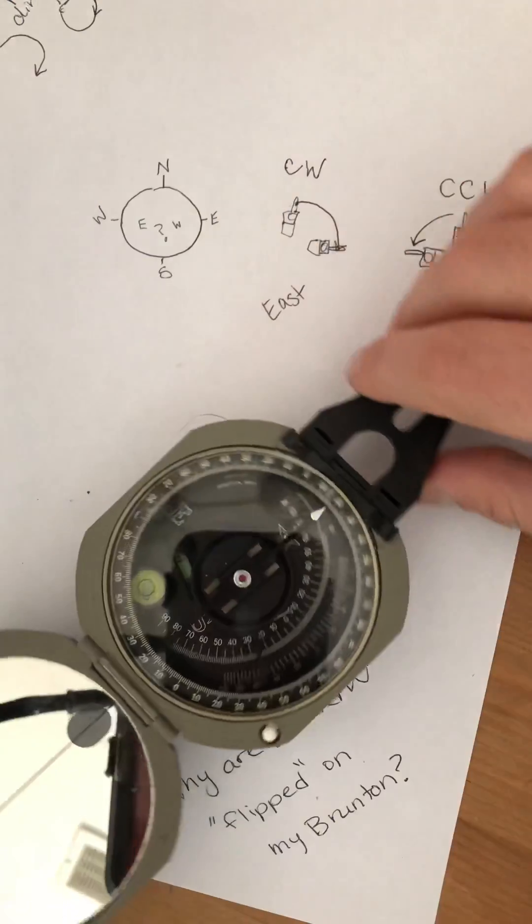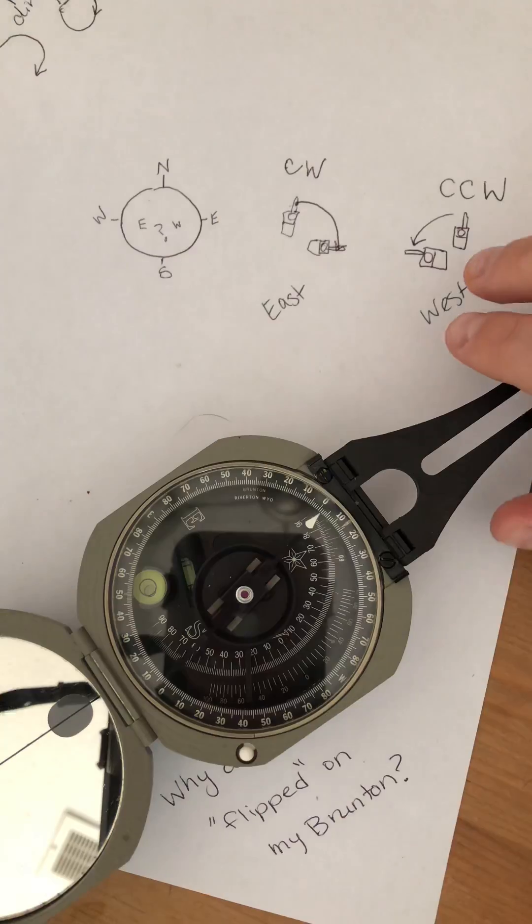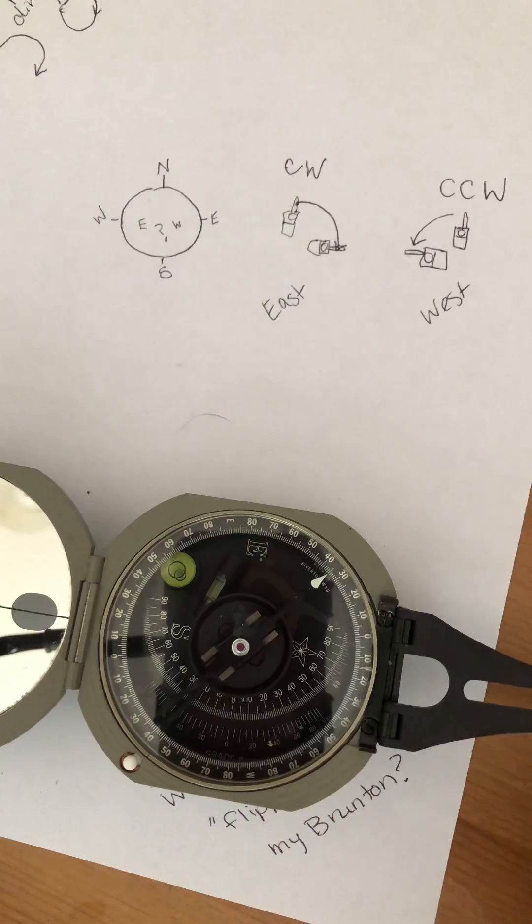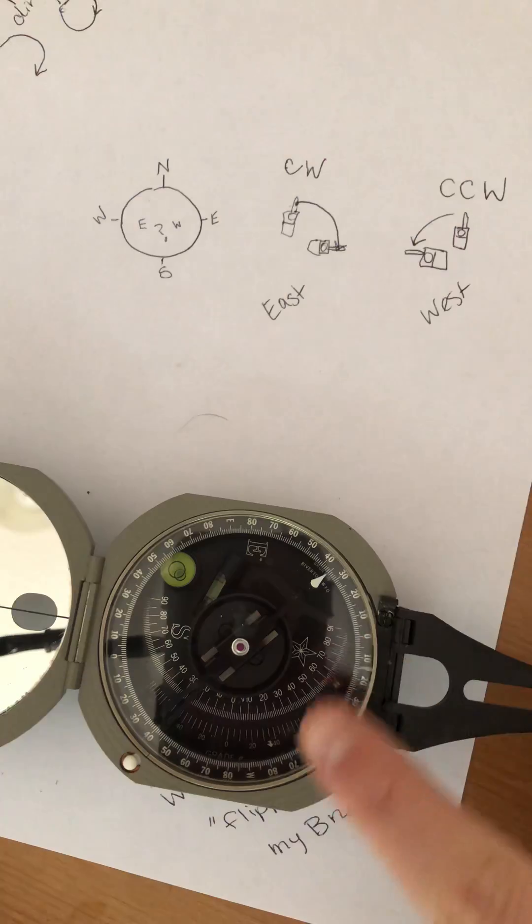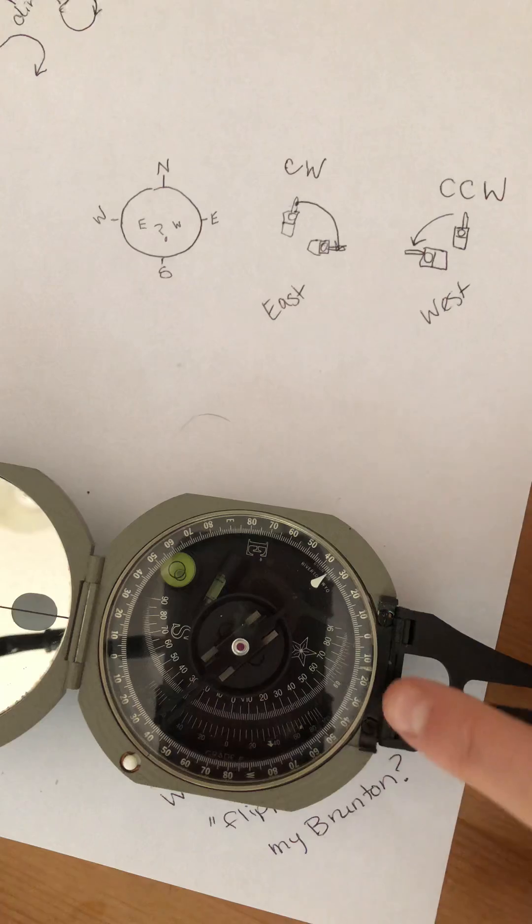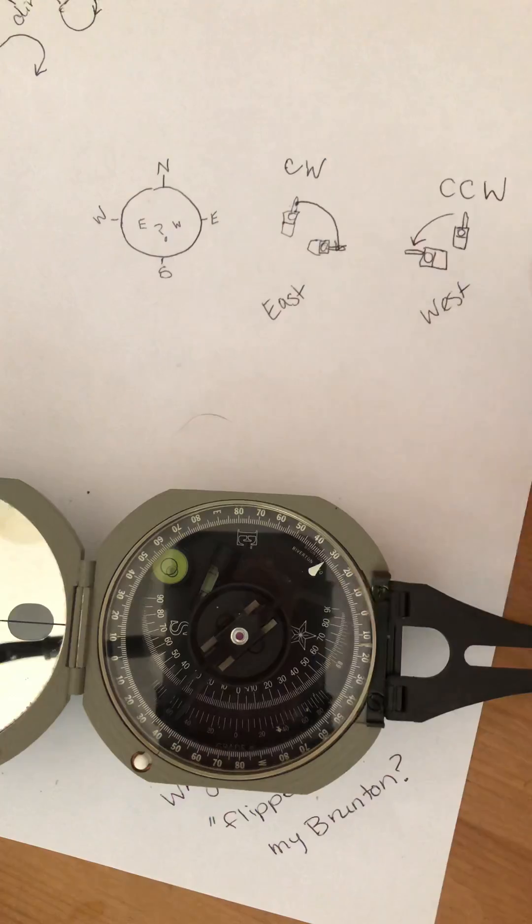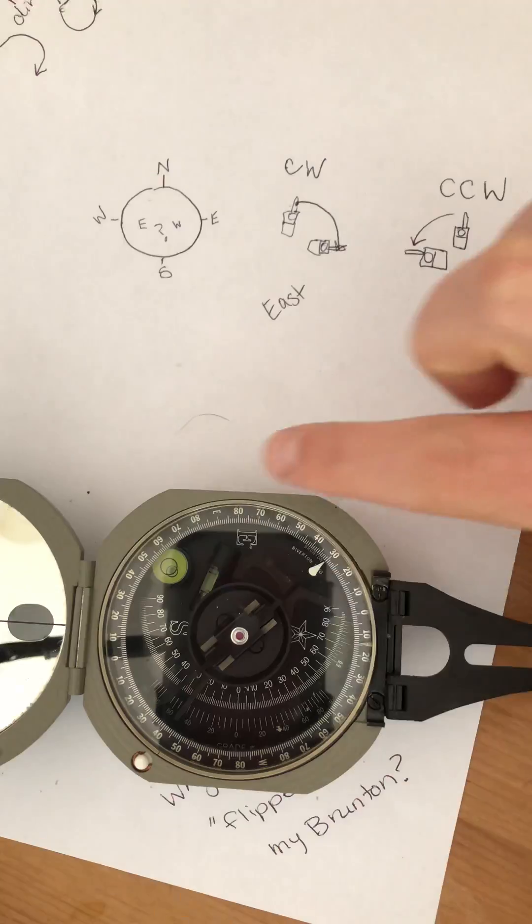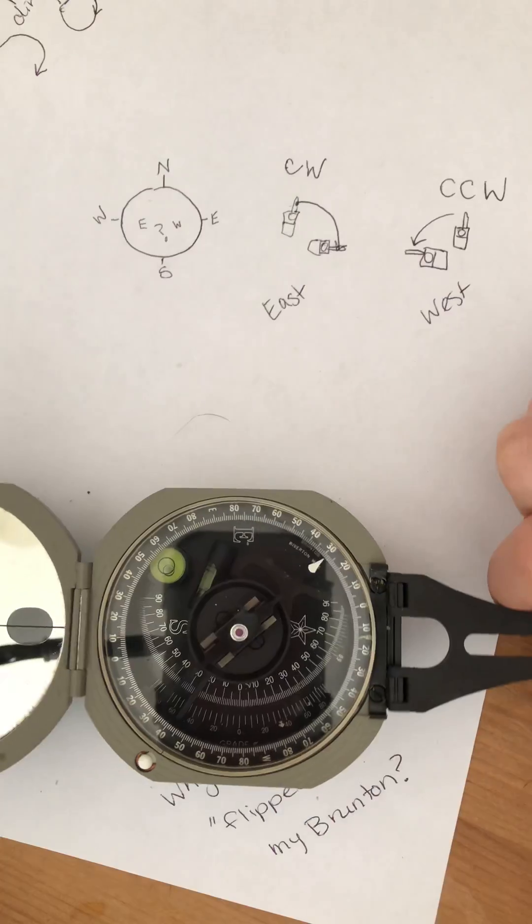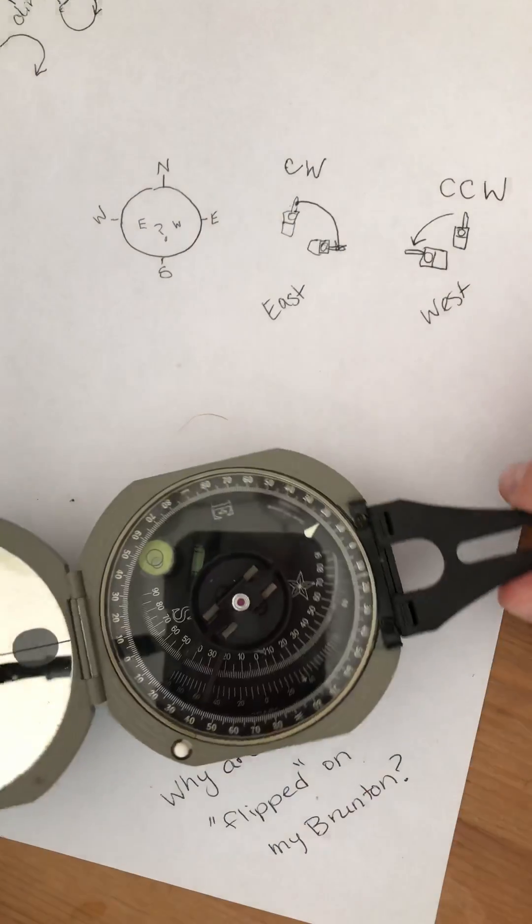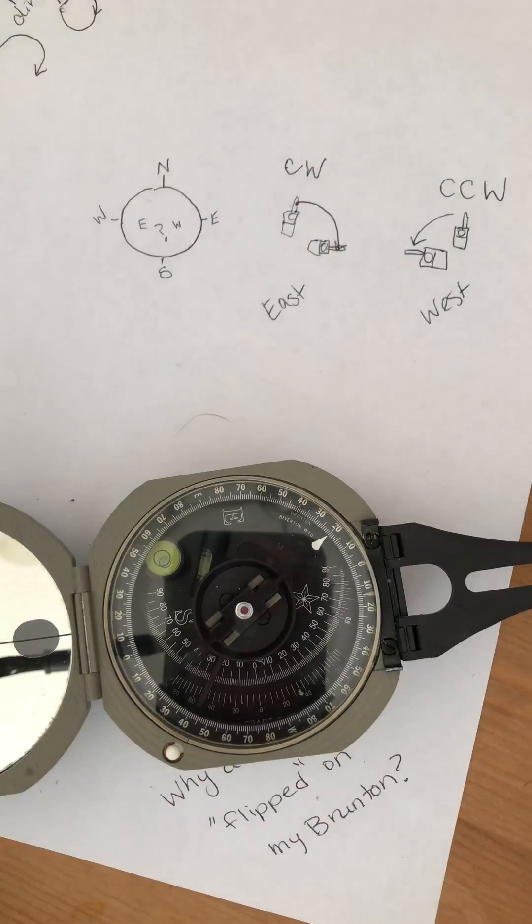And that means that when you point your Brunton to the east, the needle has rotated counterclockwise to take care of that. The needle is, in a sense, moving, but it's not really moving. It's always going to the north. So we have to relabel our Brunton to take into account that that needle is always pointing in the same direction. It's always going to point north.